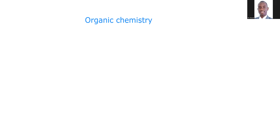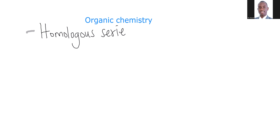The first thing that you should remember about organic chemistry is that it is divided into three major parts. The first major part that we talk about is the part of homologous series. For the homologous series, just know there are six of them.